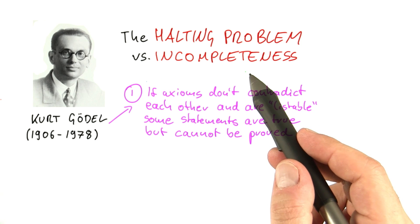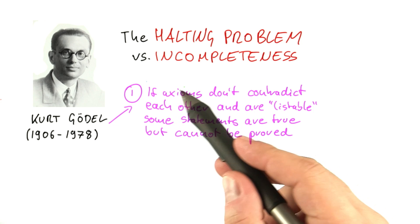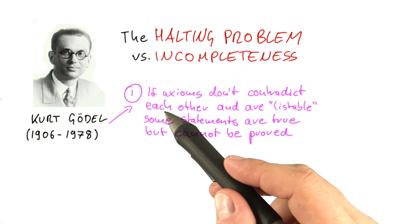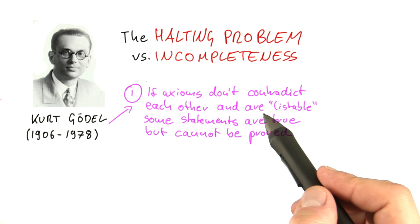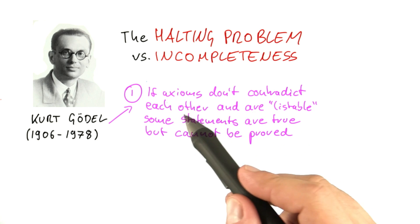He basically showed that no matter what foundation you base a mathematical system on, as long as that is a consistent foundation, then you cannot prove everything without adding additional axioms at least.